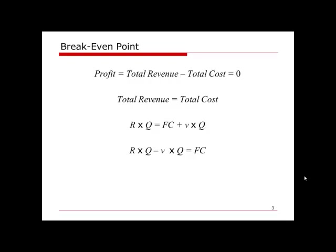After some basic algebra, the break-even point equals fixed cost divided by the difference between revenue per unit minus variable cost per unit. This is how we derive the break-even point calculation equation. Now let's take a look at some examples.